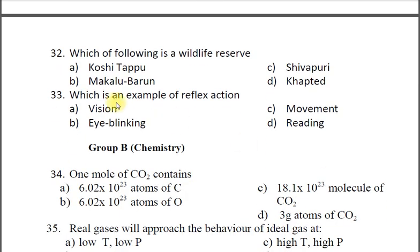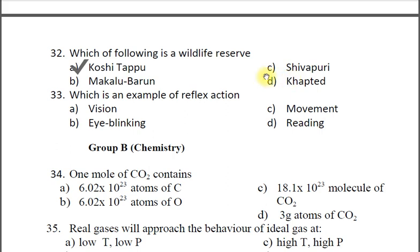Question thirty-two: Which one of the following is a wildlife reserve? A Koshi Tappu, B Makalu Barun, C Shivapuri, D Chitwan. These locations are in Nepal. Koshi Tappu is a wildlife reserve. All the other three are national parks in Nepal.